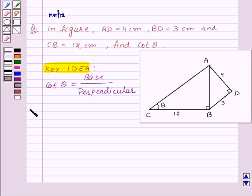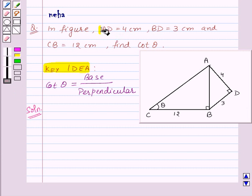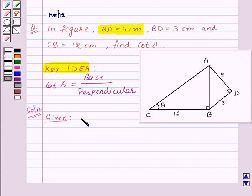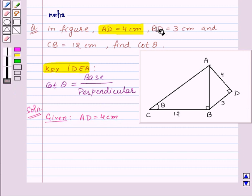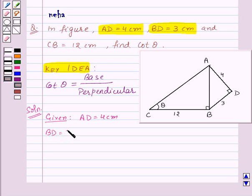Now let's move on to its solution. First of all, let us see what is given to us in the question. We are given that AD is equal to 4 centimeters, BD is equal to 3 centimeters, and CB is equal to 12 centimeters.